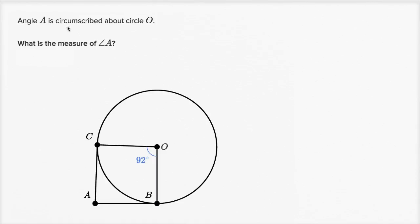We're told that angle A is circumscribed about circle O. This is angle A right over here, this angle right over there. When they say it's circumscribed about circle O, that means that the two sides of the angle are segments that would be part of tangent lines.